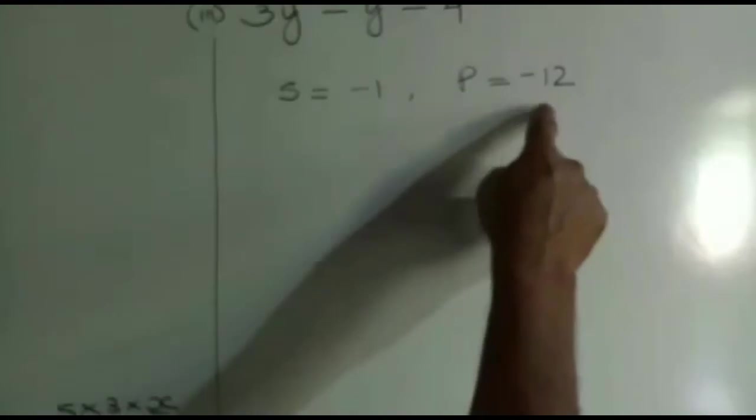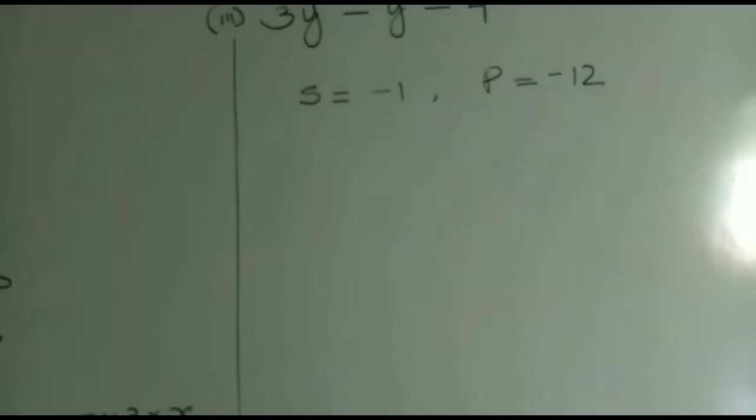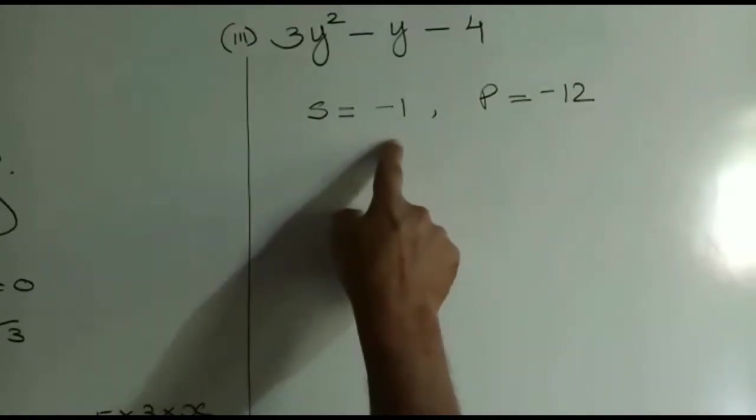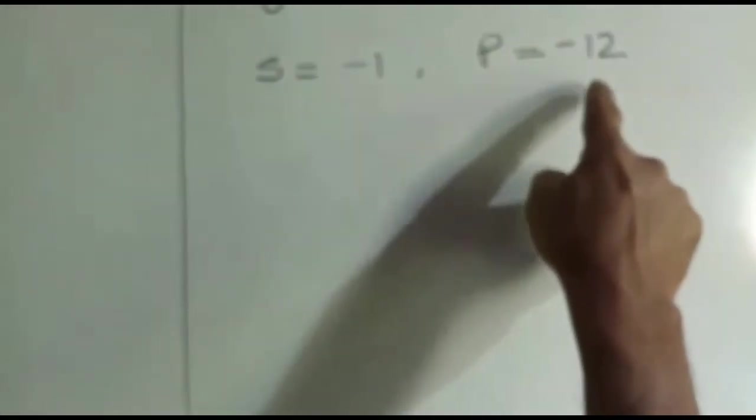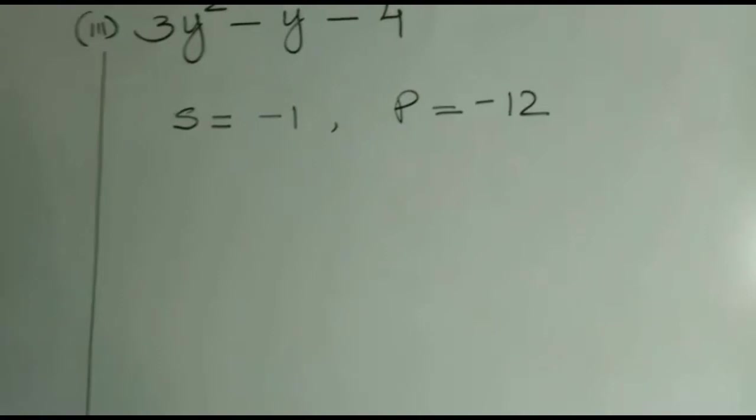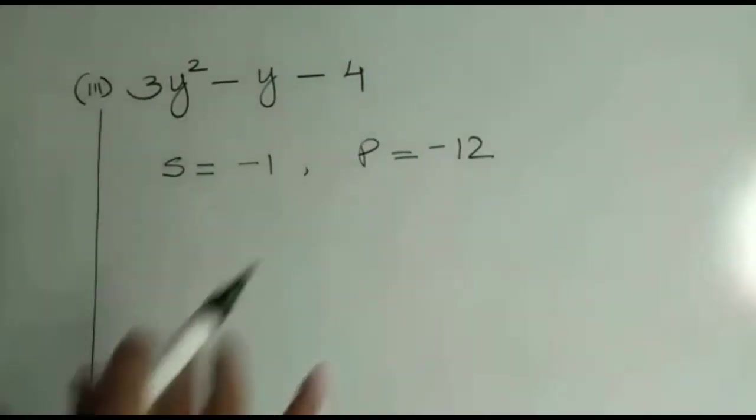As the product is positive, one of the factors is positive, another is negative. And the sum is negative. When we find out the sum of a positive and a negative number, if the sum is negative, it implies that the bigger factor is negative.